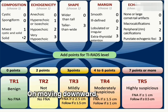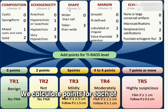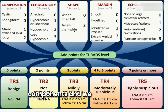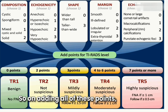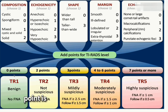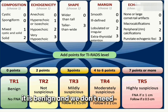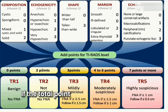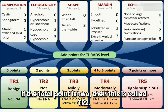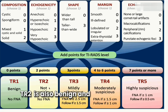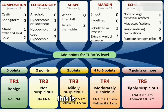We calculate points for each of these five components and add them all together. If the total points equal zero, this is TR1 — benign, no FNAC needed. If the total is two points, this is TR2 — also benign, no FNAC required.